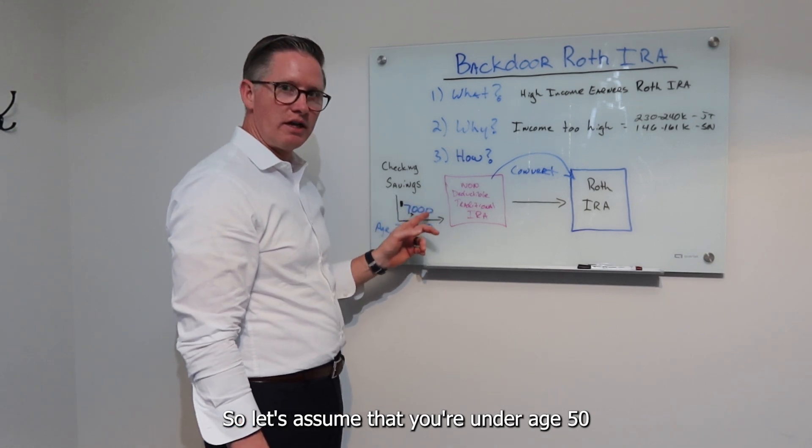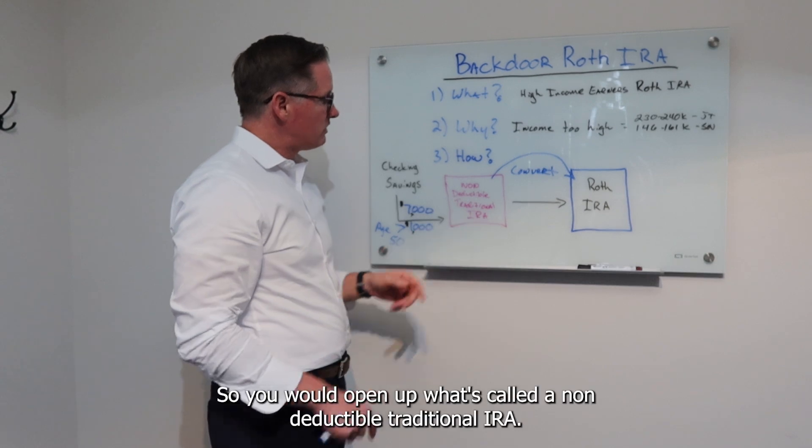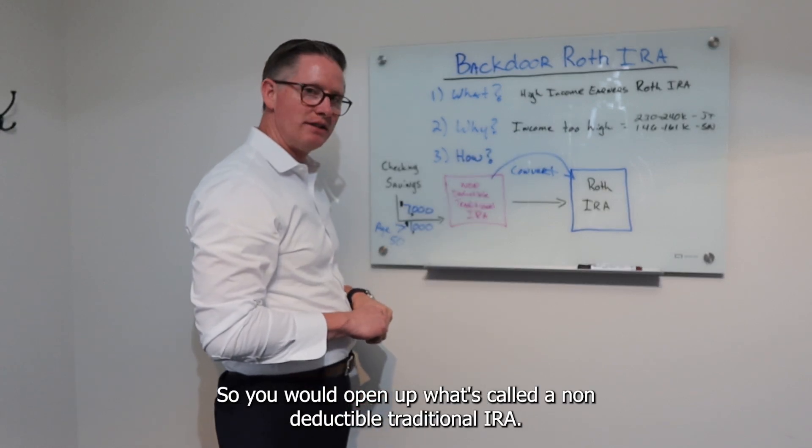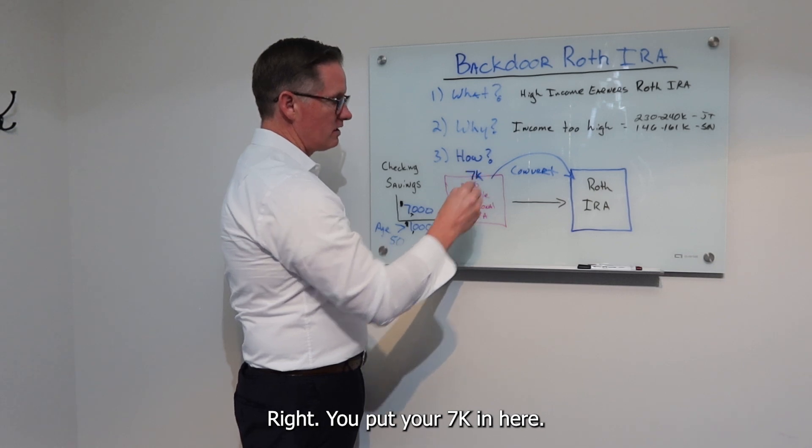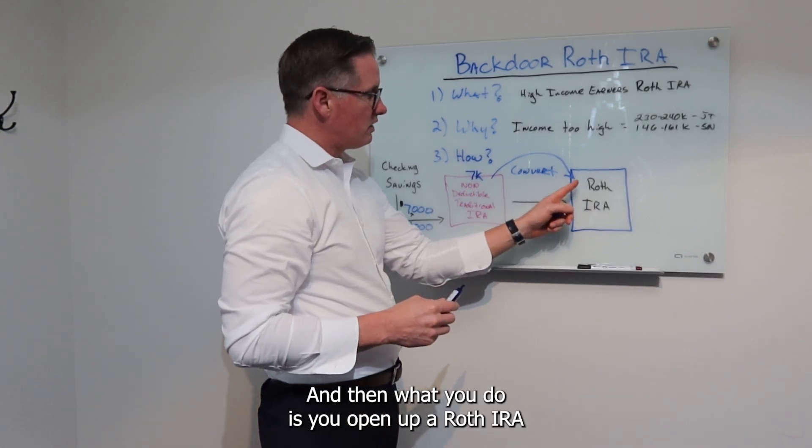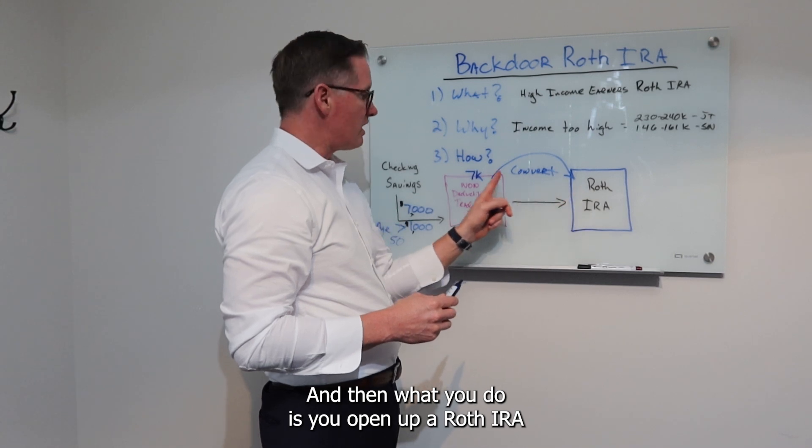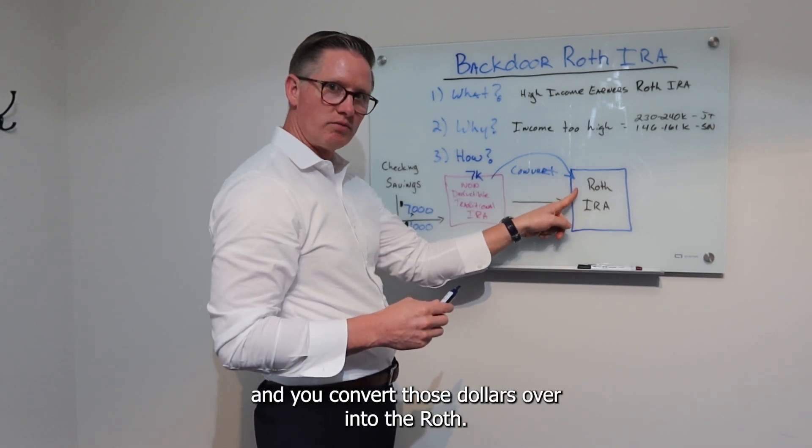So let's assume that you're under age 50 and you want to contribute the max of $7,000. You would open up what's called a non-deductible traditional IRA, put your $7,000 in here, and then what you do is you open up a Roth IRA and you convert those dollars over into the Roth.